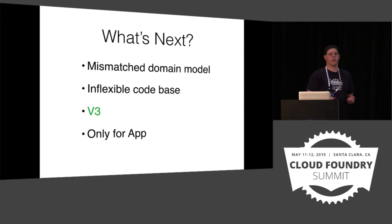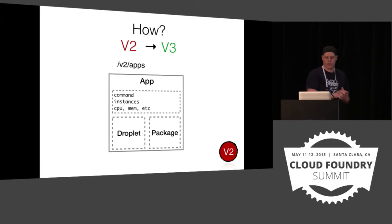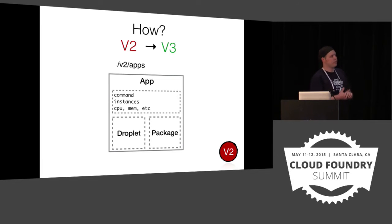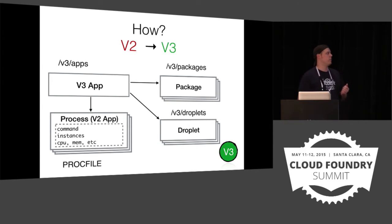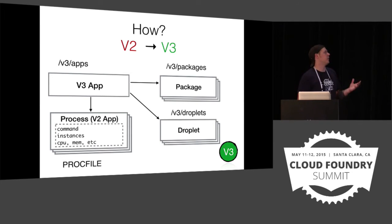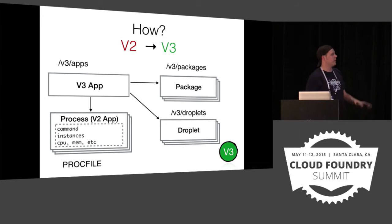Specifically for V3, we're just going to talk about app — not spaces, users, or anything else. Today we have our V2 API app object with the things we want; we just need to break it apart. We're going to pull out packages, pull out droplets, and pull out processes, and give them their own API endpoints so they can be interacted with and treated differently, giving us a more robust vocabulary. We're going to pull V3 app up as a new object, and what we call a process — like our proc file — is really the old V2 app managed by the proc file.